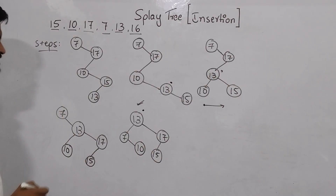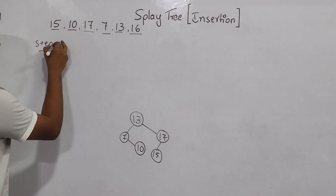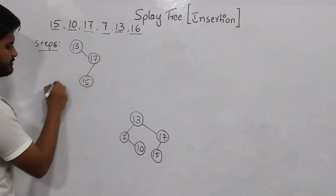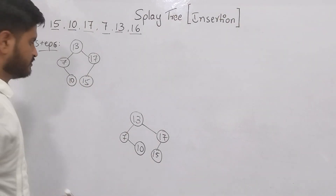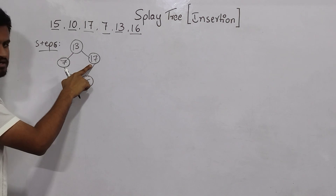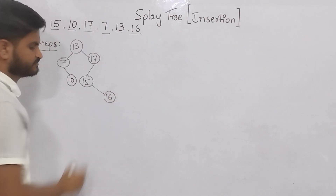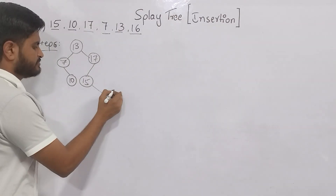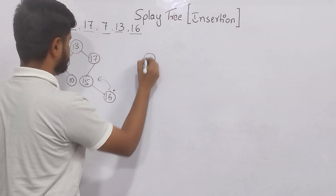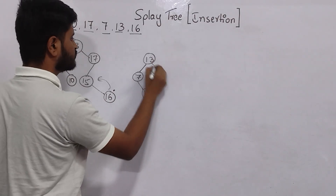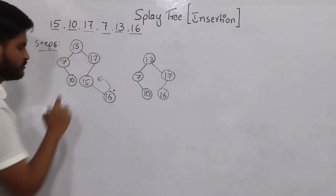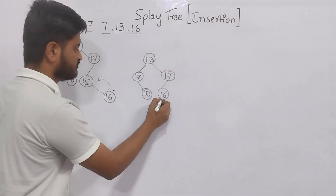Now I must insert only 16. At the end of step 5, the tree has: 13 as root, 7 and 17 as children, 10 as right child of 7, 15 as left child of 17. Applying splay tree insertion: 16 is greater than 13, less than 17, and greater than 15, so it goes to the right of 15. I must make 16 the root. First, I go one level up and exchange 16 with 15. 13, 7, 10, and 17 stay the same. 16 comes here; 15 is less than 16 so it goes to the left.